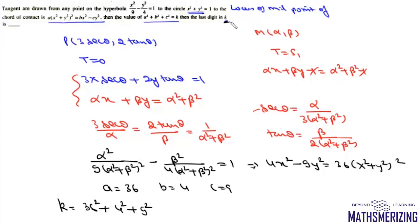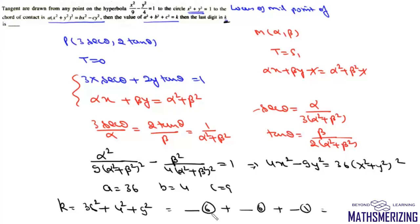We only need the last digit of k. 36² ends in 6, 4² = 16 ends in 6, and 9² = 81 ends in 1. So the last digit of k is 6 + 6 + 1 = 13, giving last digit 3. That is the answer.